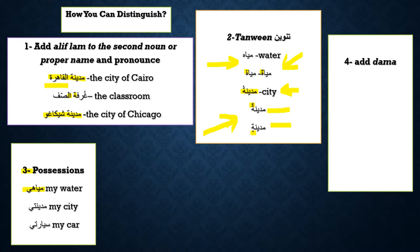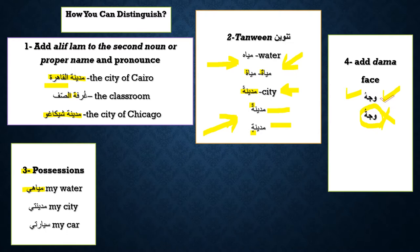Another way: add dhamma. For example, 'wajah' — wajah means face. If you add dhamma and pronounce it, you cannot say 'wajahtu' — 'wajahtu' is wrong. The correct form is 'wajhun' or 'wajhuhu.' So 'wajah' is ha, not ta marbuta — 'wajahtu' is not any noun in the Arabic language. But 'wajh' does have meaning — it means face.